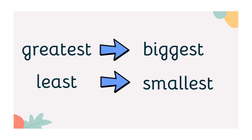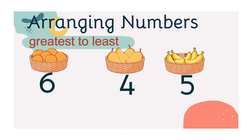Are you ready to arrange numbers, kids? Okay, let's start! Let's take a look at this example. We have oranges, mangoes, and bananas.